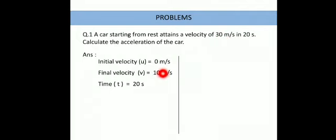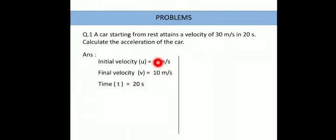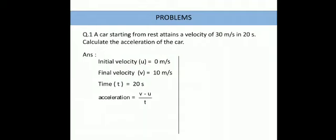The final velocity of the car is 30 meter per second — please note the correction, it should be 30, not 10. And the time taken is 20 seconds. So initially the car was at rest, then in 20 seconds its speed increased to 30 meter per second. We have to find the acceleration of the car. Acceleration equals final velocity minus initial velocity divided by time.